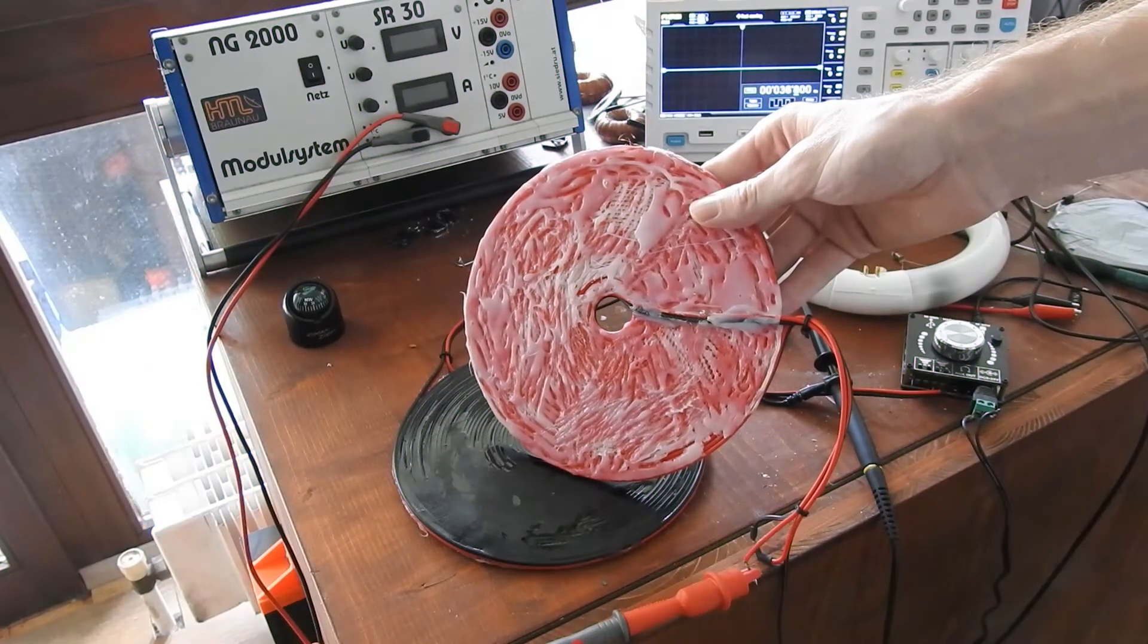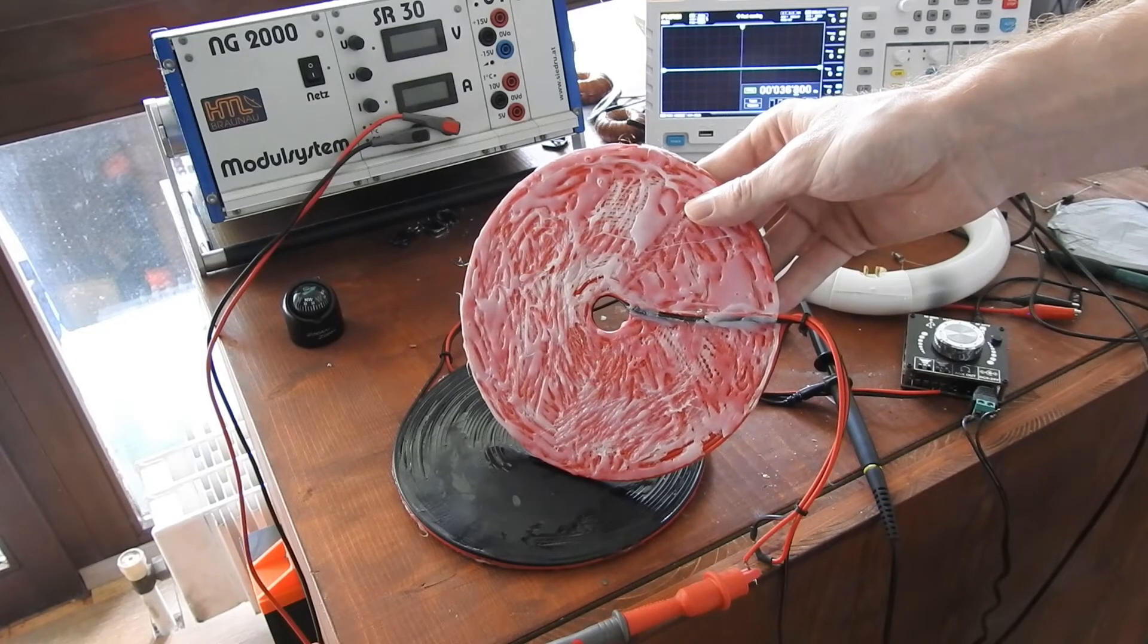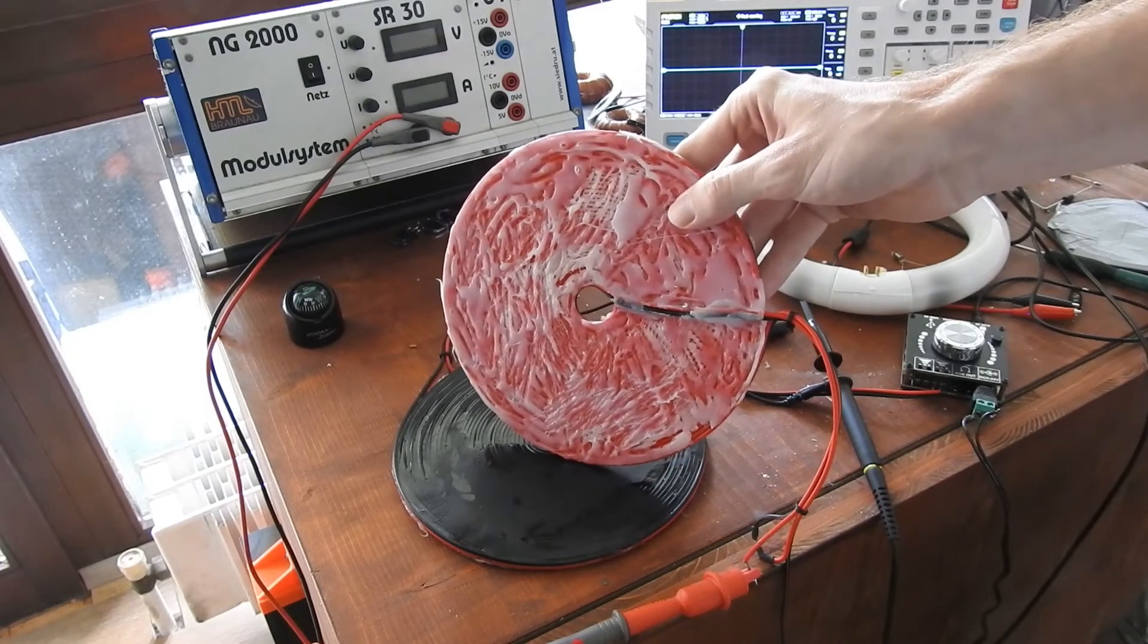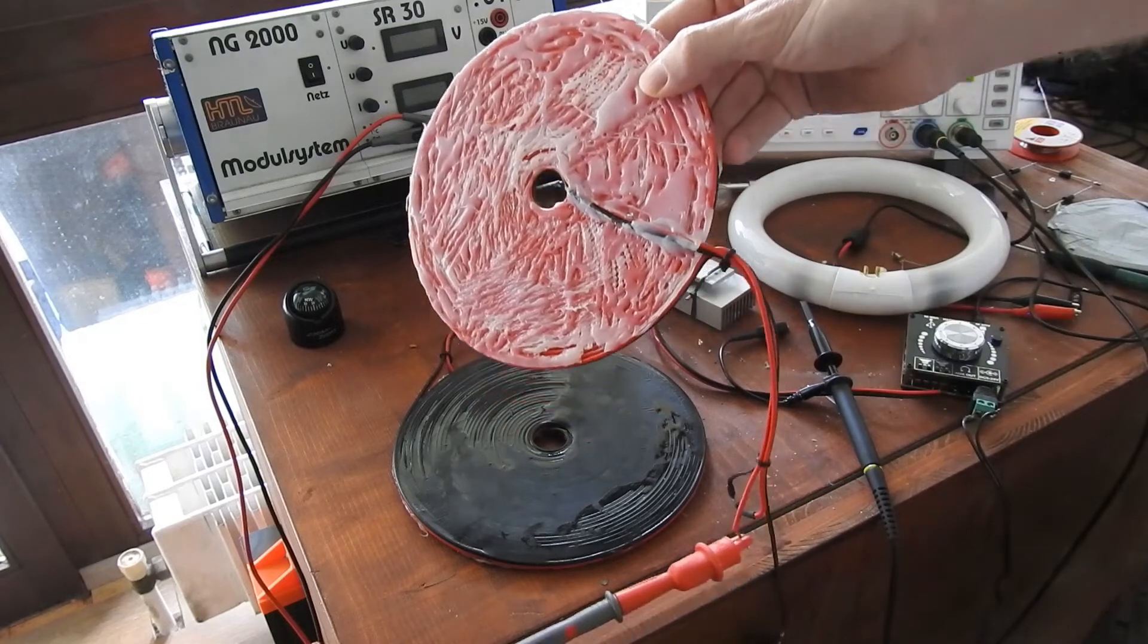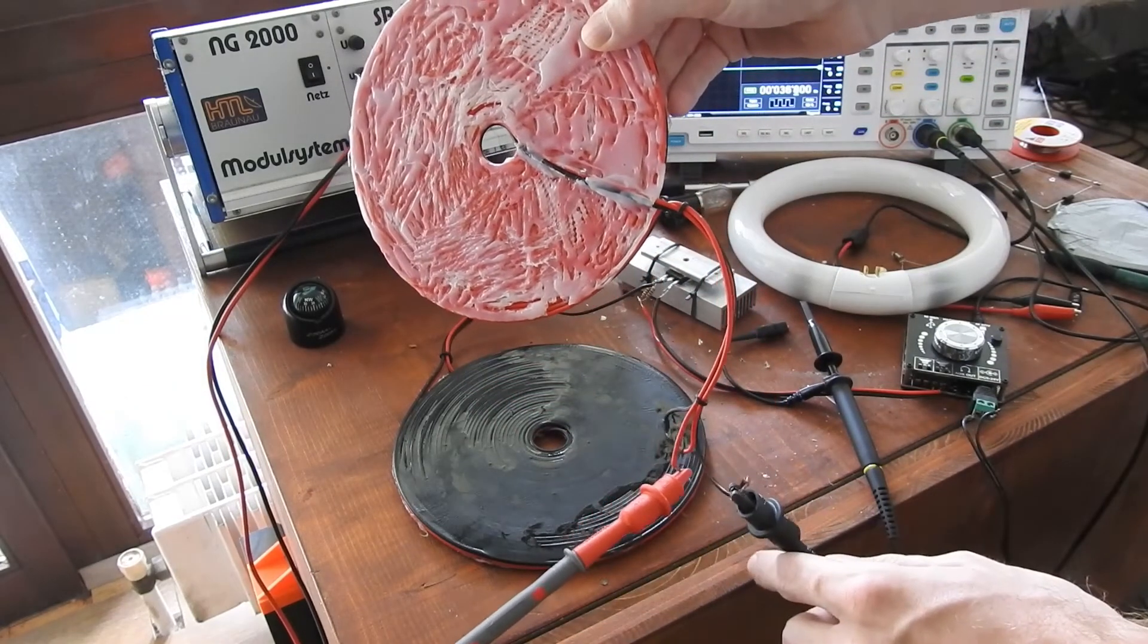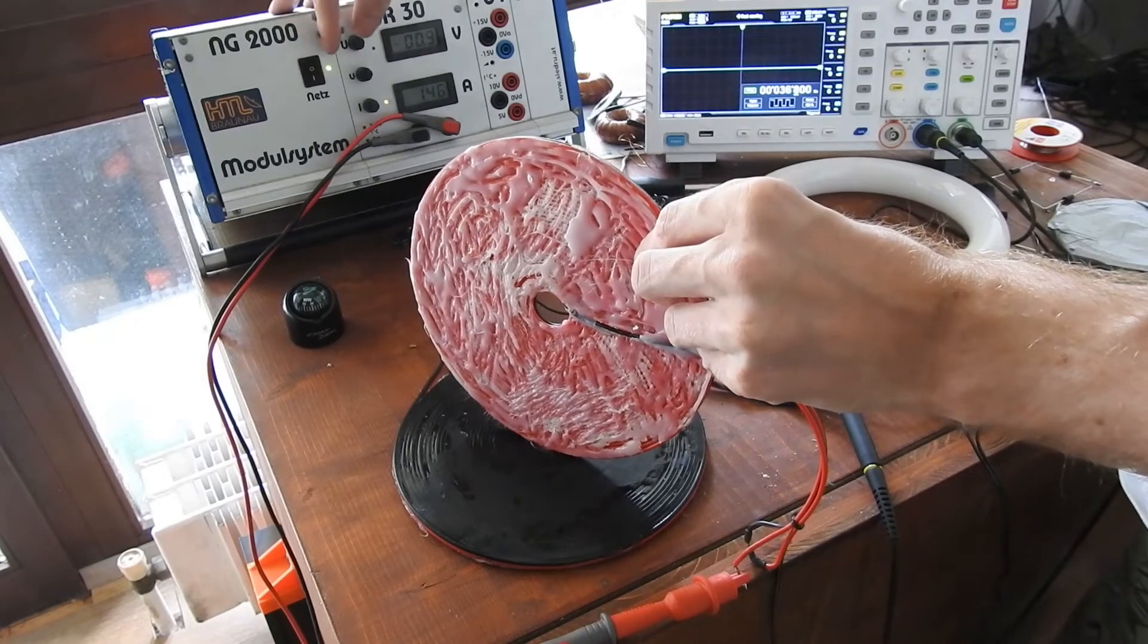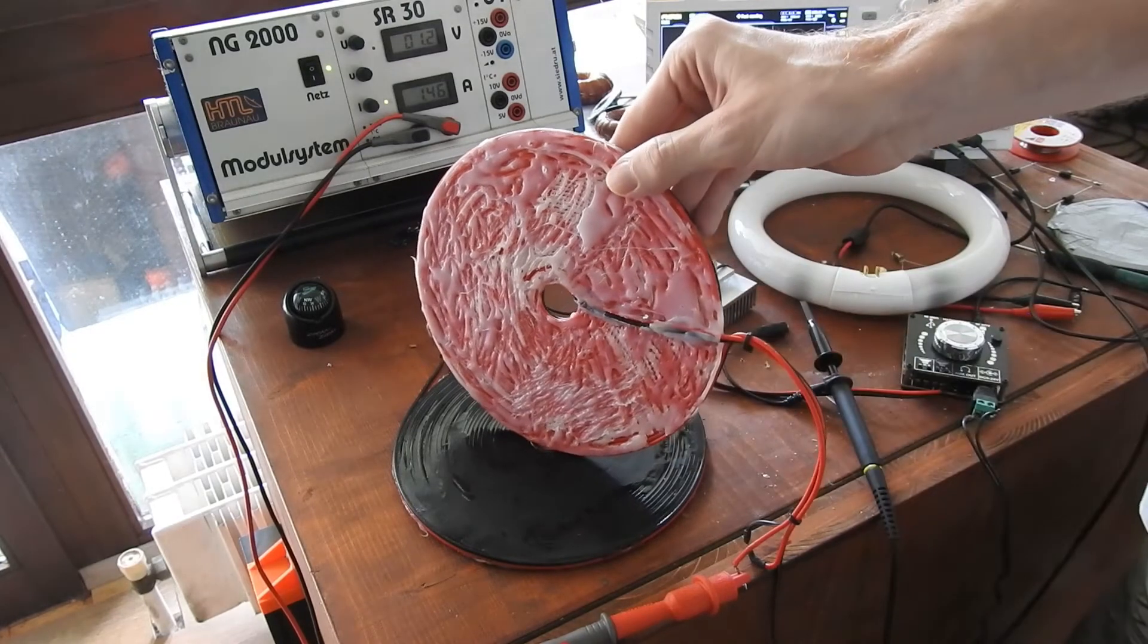So now we come to the part where I will show you three different methods of how you can operate a bifilar coil. And for the first one this will be the simplest one. I have just connected plus and minus of my DC power supply and we will use it as a regular electromagnet.